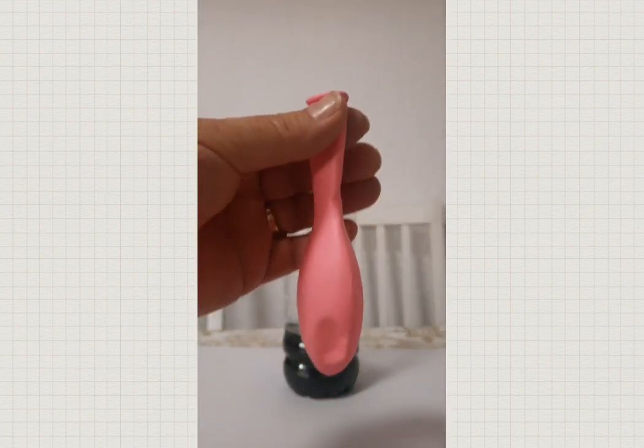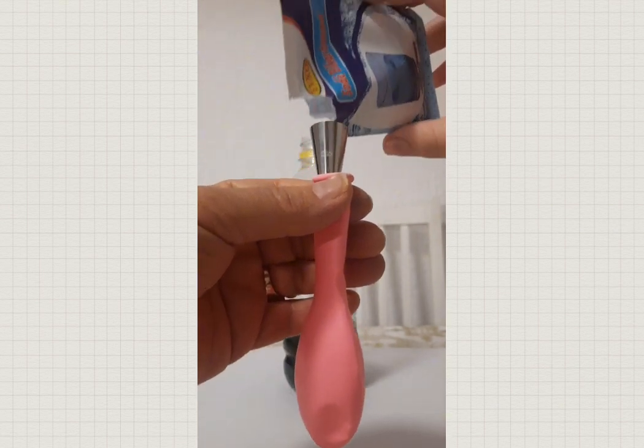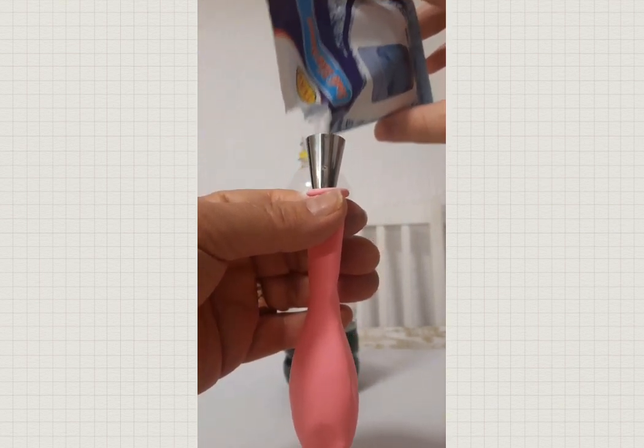Then grab a balloon and a funnel, so you can easily add the baking soda in the balloon. I suggest using around 10 to 15 grams.